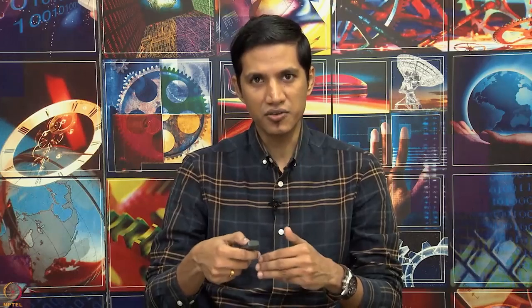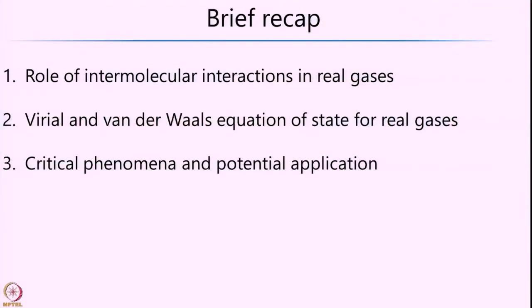In the Van der Waals equation of state, we tried to construct the equation using phenomenological or intuitive arguments based on the interaction between molecules. We also looked at some of the advantages and limitations of the Van der Waals equation of state. Finally, we saw what are called critical phenomena or critical points and some potential applications, for example, selective and benign extraction of chemicals from a given mixture by varying temperature and pressure. We took the example of supercritical carbon dioxide to illustrate this.